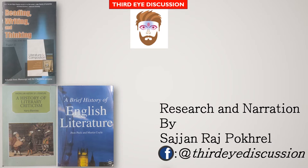There are three books assigned by Tribhuvan University which cover the syllabus of BA first year major English. Book 1: Reading, Writing and Thinking. Book 2: A History of Literary Criticism. Book 3: A Brief History of English Literature.